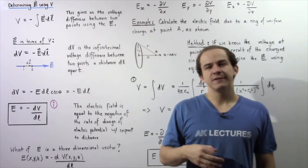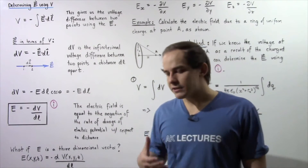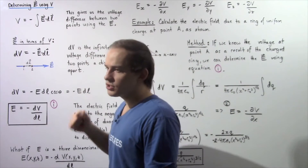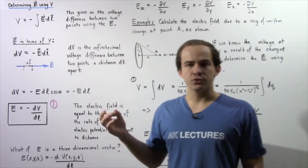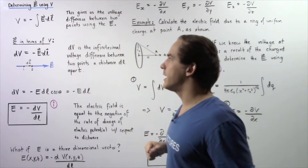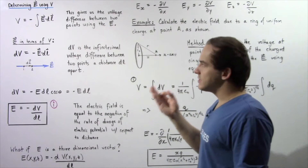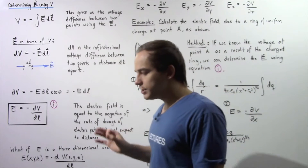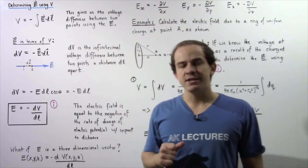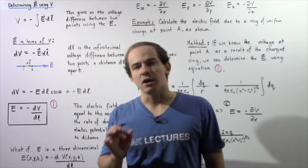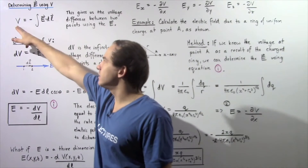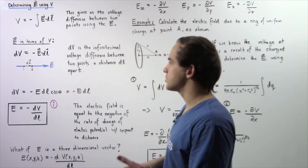Previously, we were able to show that the voltage difference — the electric potential difference — is equal to the negative of the integral of the dot product of the electric field vector and our infinitely small vector given by dl. This essentially gives us the electric potential difference between any two points as a result of the electric field, so if we know what the electric field is, we can calculate what the voltage difference is.